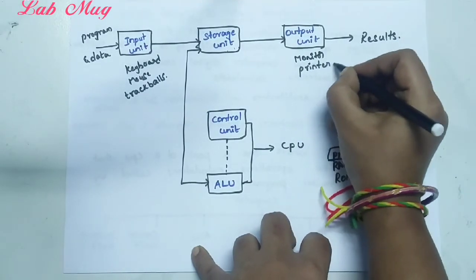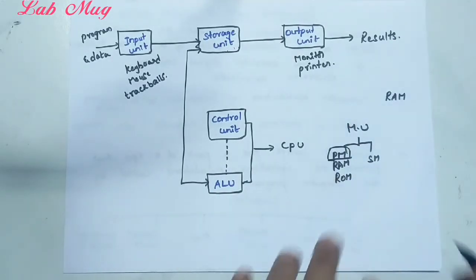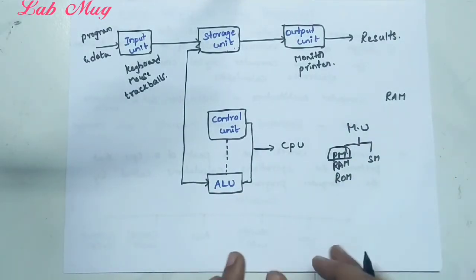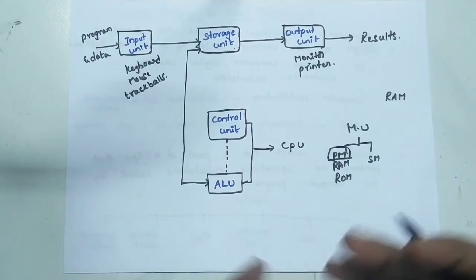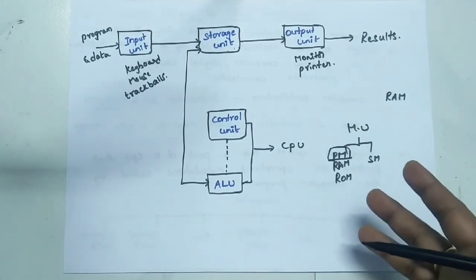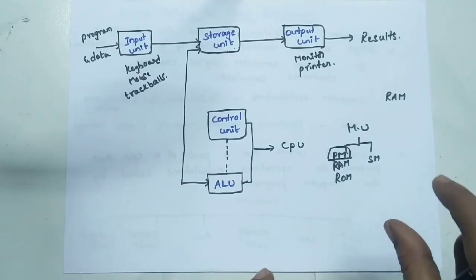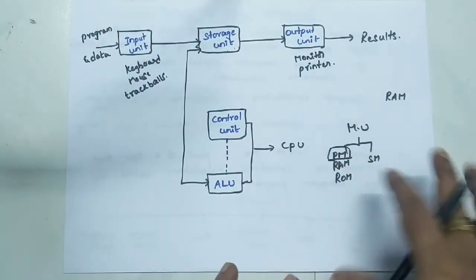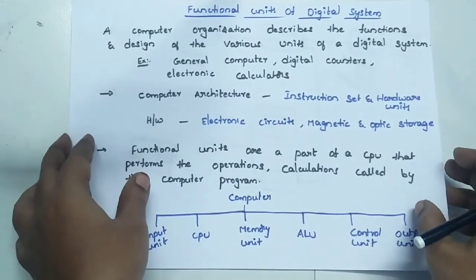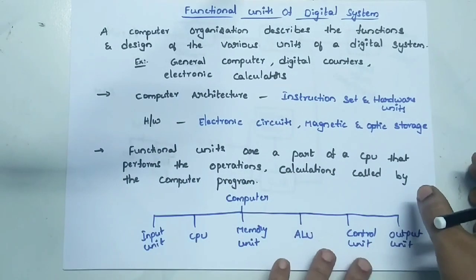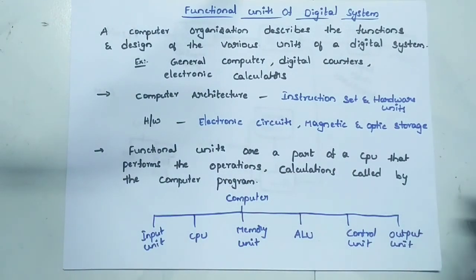These are all examples related to the output unit. This covers the total functions of a digital system. Write down each and every device. These are very important short-answer questions in computer organization and architecture — functional units of a digital system. Thank you.